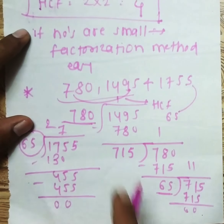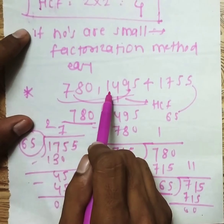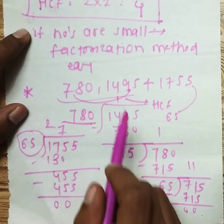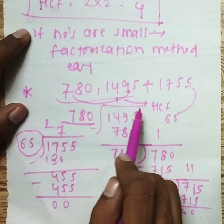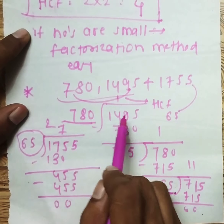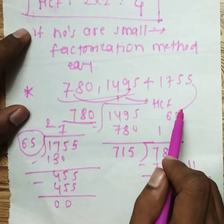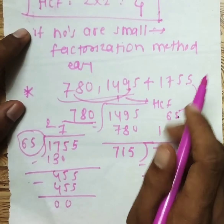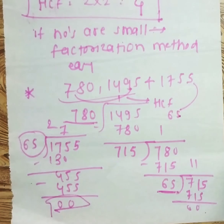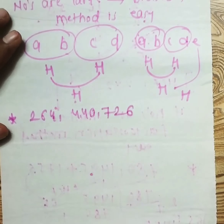We calculated the HCF of the large numbers 780, 1495, and 1755. We divided 1495 by 780 and got 65 as the HCF of those two, then divided 1755 by 65 and got a remainder of zero, confirming that 65 is the HCF of all three numbers.